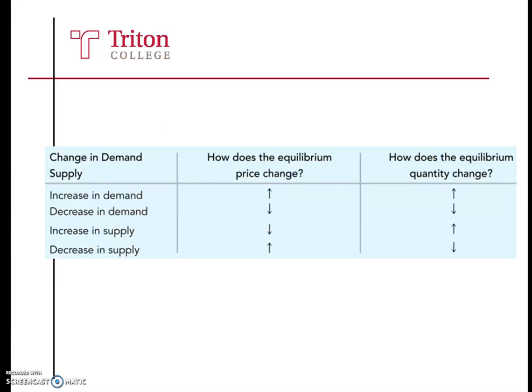Here we have a data set that shows the possible outcomes when there is a change in demand and a change in supply. The example we just saw is the first one: when demand increases, price equilibrium will increase, while quantity equilibrium will also increase.